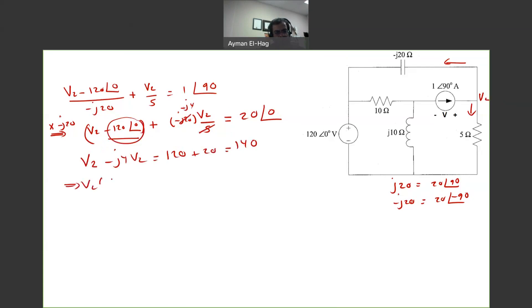So, V2 times 1 minus J4, equal to 140. So your V2 is equal to 140 divided by 1 minus J4. Dividing two numbers, again, we convert everything into polar. This is already angle 0, so this is equal to 140 angle of 0, divided by 4.12 angle of minus 76. So from this, you can say that V2 is equal to 34 angle of 76. So this is your V2.